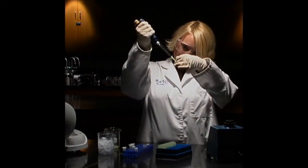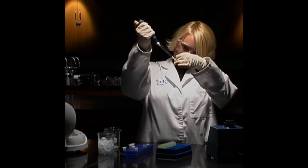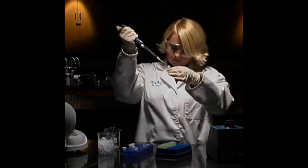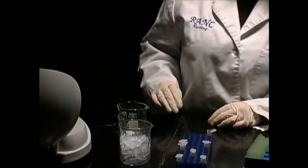Centrifuge this tube at full speed for 10 minutes to form a pellet of plasmid in the lower part of the tube. Carefully remove the supernatant with a transfer pipette without touching the sides of the tube. Leave the tube open and allow the pellet to air dry for approximately 10 minutes.